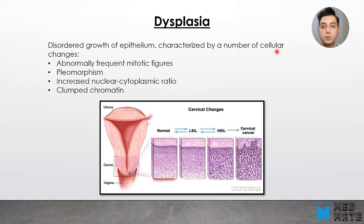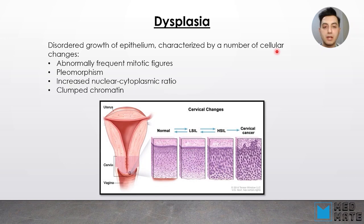Dysplasia is another cellular adaptation and it is disordered growth of epithelium. Dysplasia is also reversible and is characterized by a number of cellular changes: abnormal frequent mitotic figures, pleomorphism (morphological changes to the tissue), increased nuclear-to-cytoplasmic ratio, and clumped chromatin. Here you can see cervical changes from normal to cervical cancer and how dysplasia is marked in these two steps of the cervical changes.